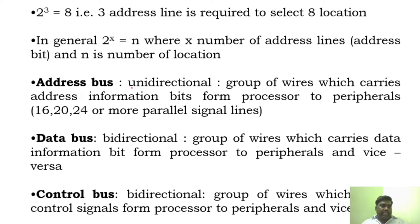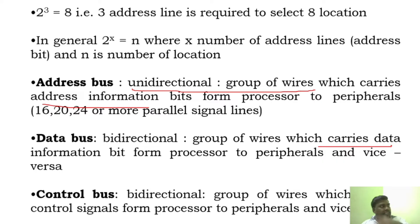Each bus is a group of wires. The address bus is a group of wires which carries address information. The data bus carries data — from processor to peripherals and vice versa. Similarly, the control bus is a group of wires which carries control signals from processor to peripherals.